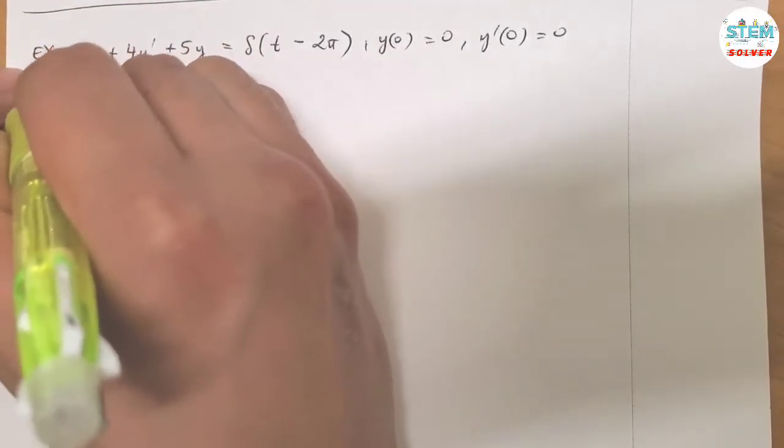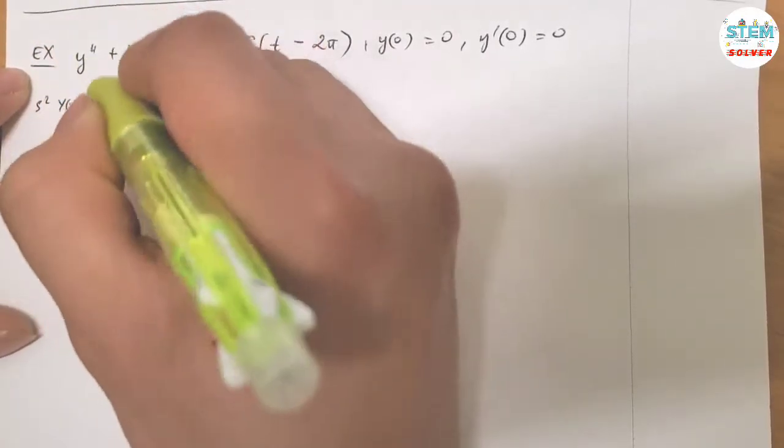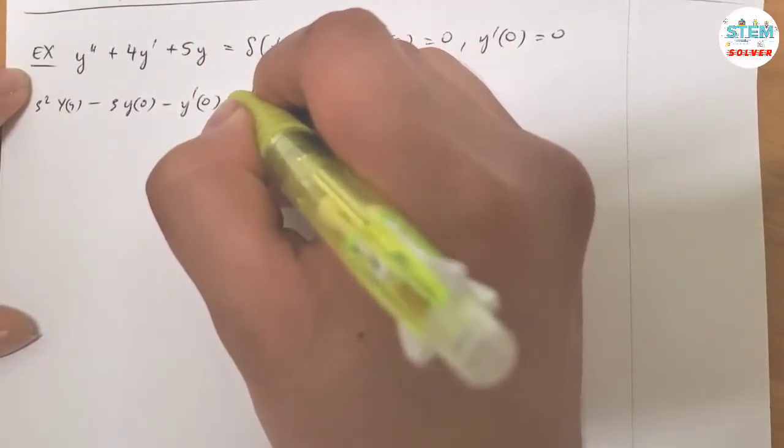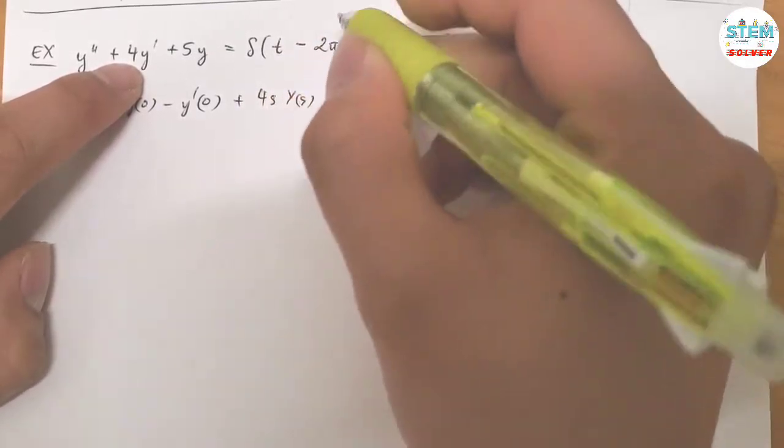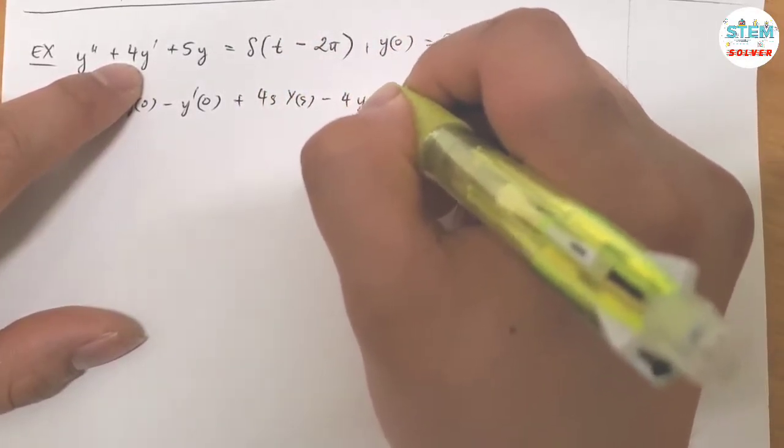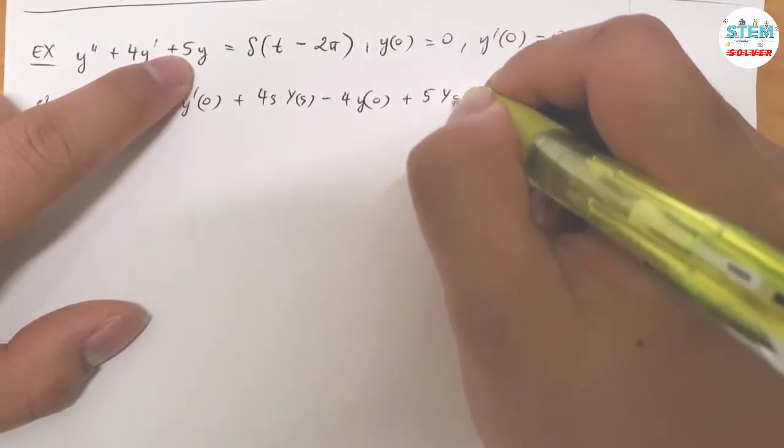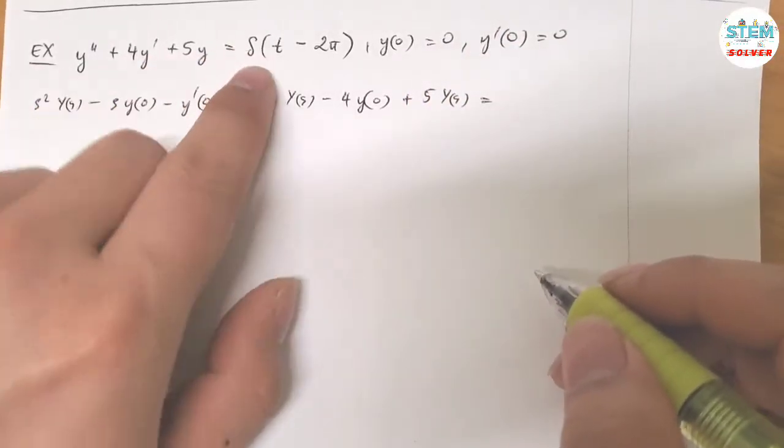Apply that theorem: I have S² times capital Y of S minus S·Y(0) minus Y'(0) plus 4S·capital Y of S minus 4Y(0) plus 5Y·capital Y of S equals on the right side...